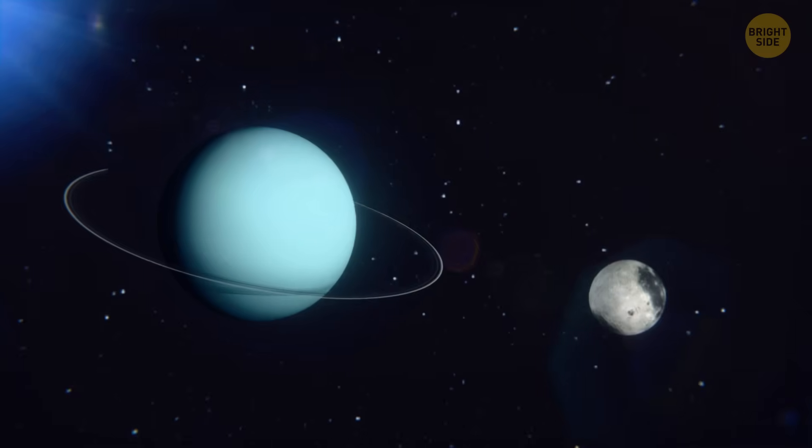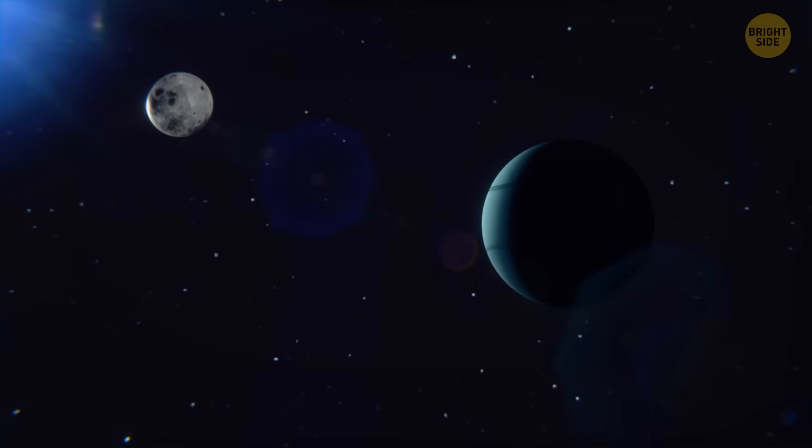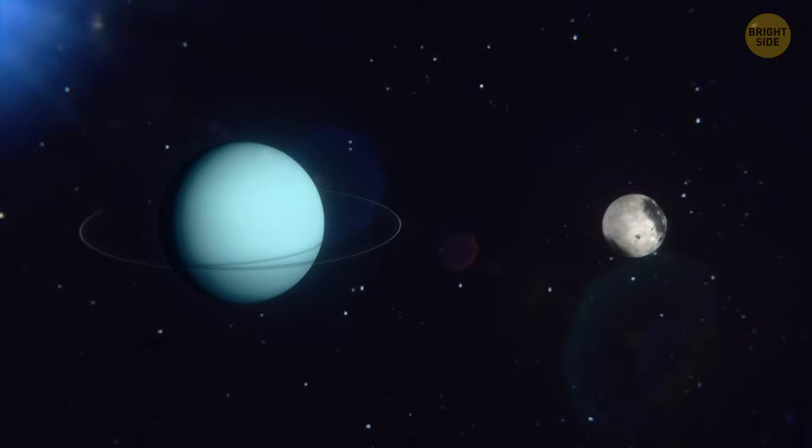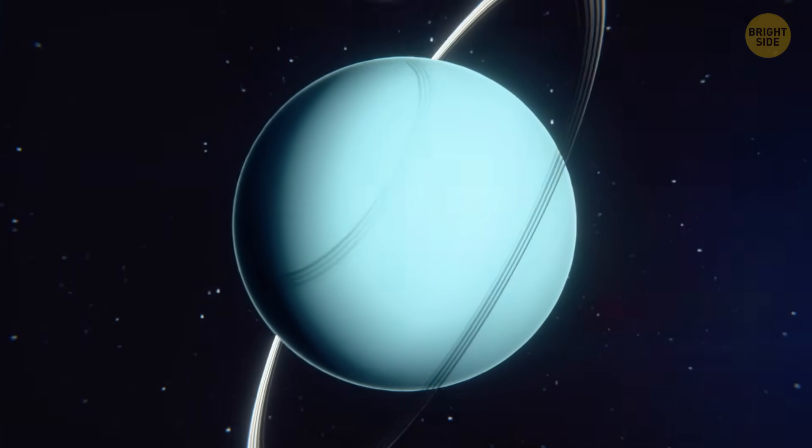This moon pulled on Uranus with its gravity, making the wobbling even worse. As time went on, it made Uranus tilt more and more. Eventually, it crashed into the planet, locking it into its current tilt.